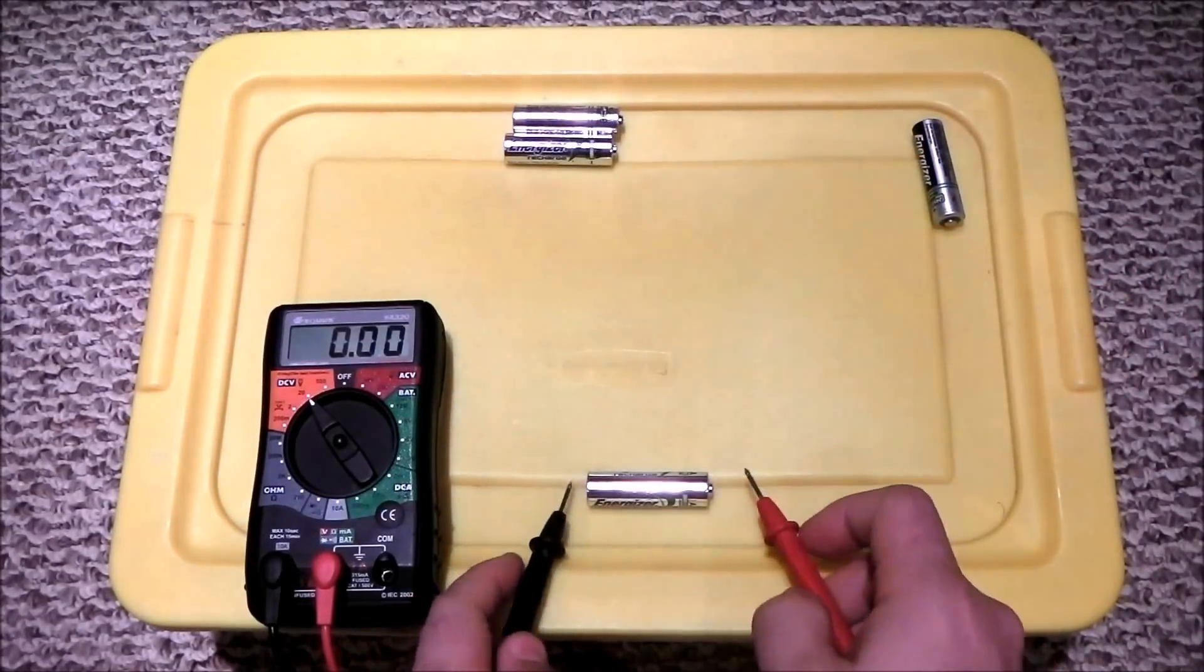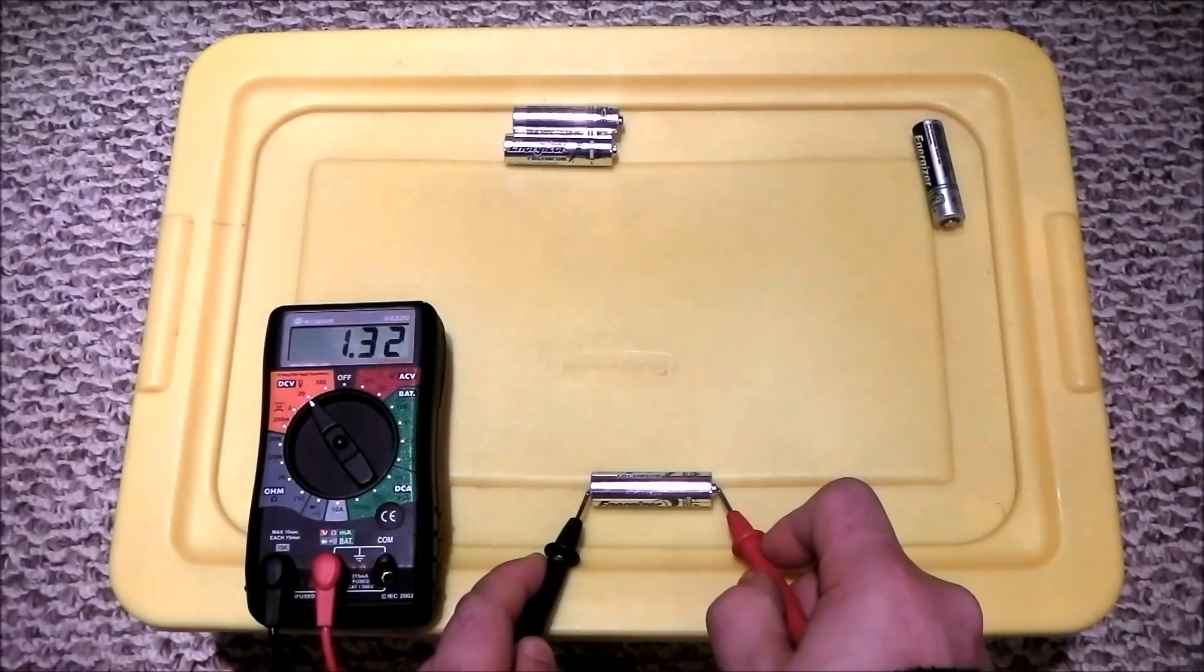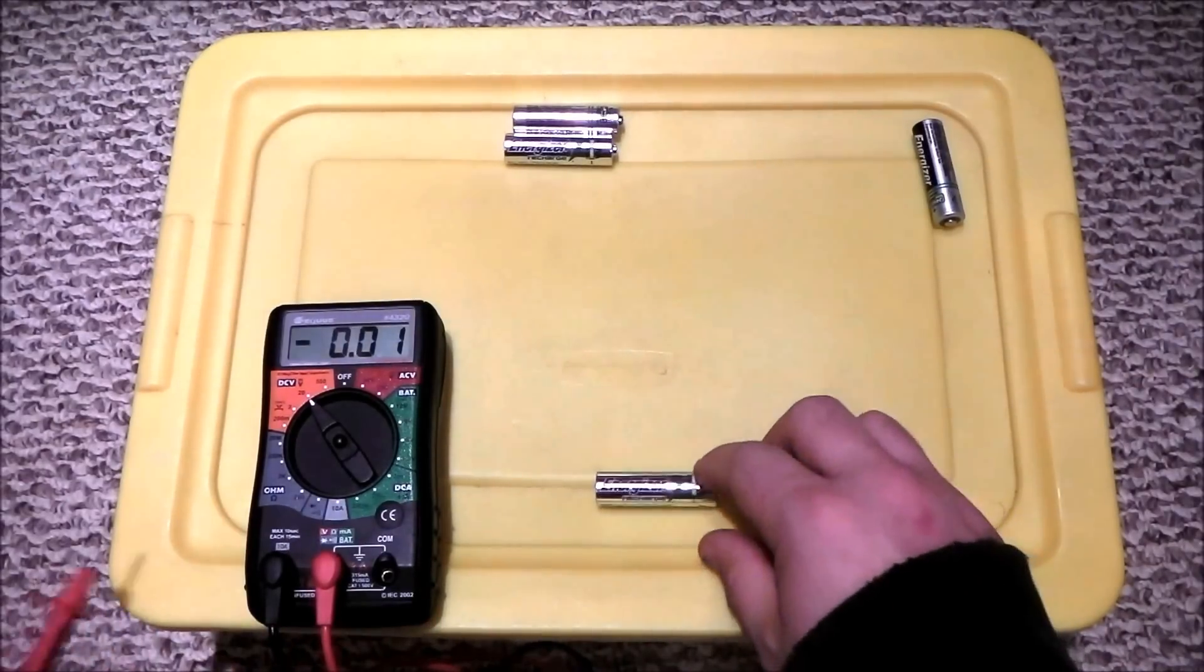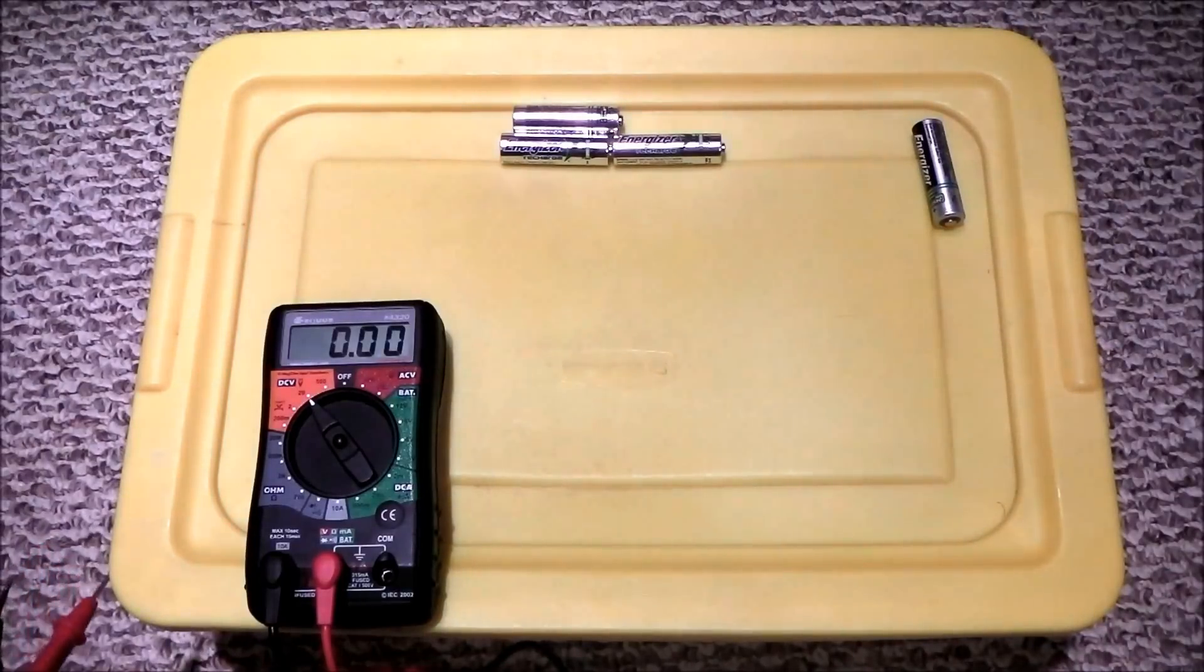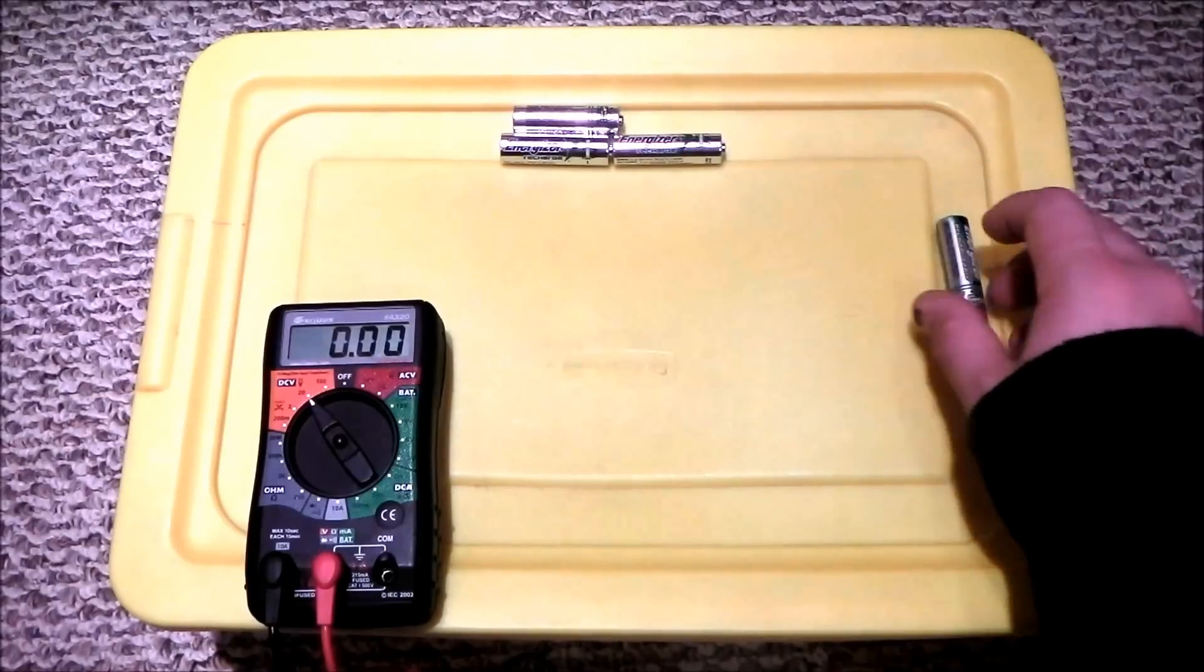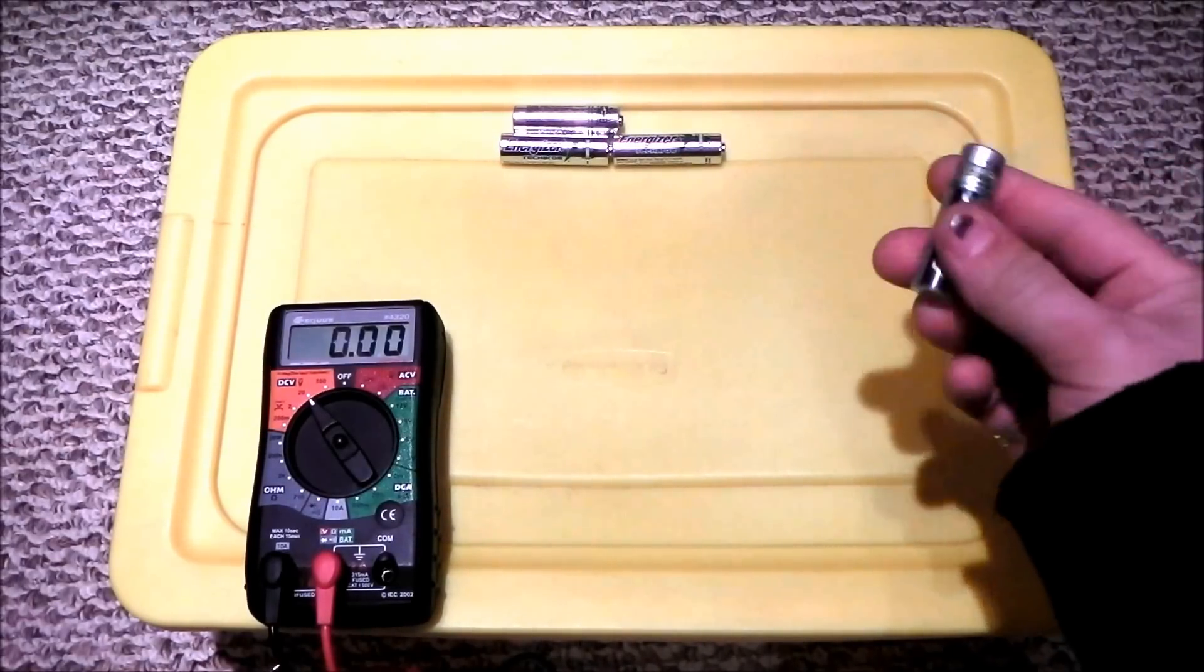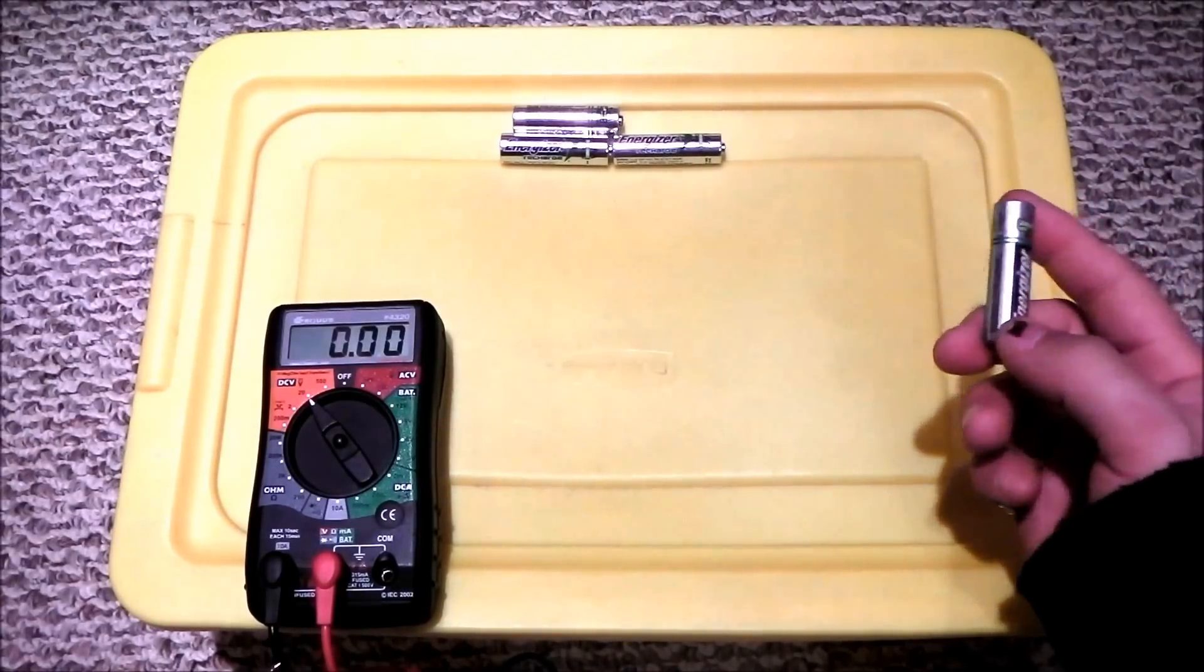Let's check out the last one here. And this one's reading 1.32. So that's above the 1.25 threshold that you should be looking out for. Anything lower than 1.25 is only good for using in a TV remote control or just toss it in the garbage. So this is the battery that was causing me all my problems. So I'm going to chuck it, get a new one.